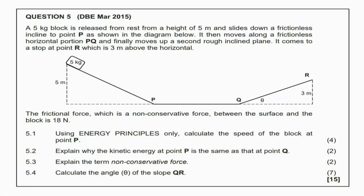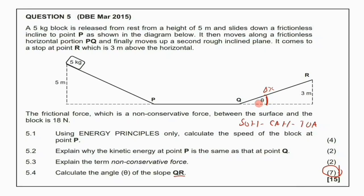Question 5.4 asks us to calculate the angle theta of slope QR — a 7-mark question. To find theta using trig ratios, we need the hypotenuse, which is the displacement from Q to R (delta x). That value is missing, so we must find delta x first. Once we have delta x, we can use sine (opposite over hypotenuse) to find theta.